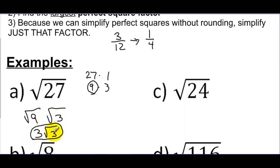I'm going to say this is now a simplified expression. It's got smaller numbers than 27, and I was able to simplify part of it — just kind of like I did up here with 3/12.